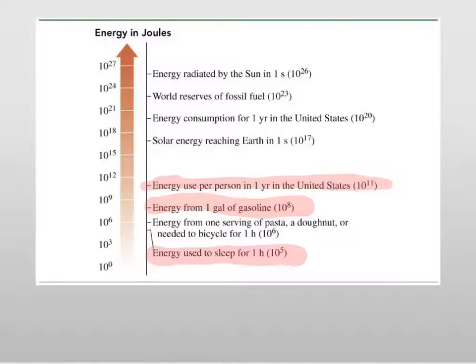But if we look compared to more things, we can see the solar energy reaching Earth every second is 10 to the seventeenth joules. And the energy consumption in each year in the United States is 10 to the twentieth.